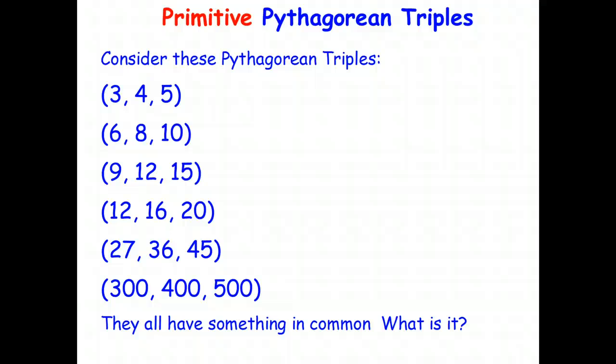G'day students. In the last video we introduced you to an interesting application or area of study involving the Pythagorean theorem called Pythagorean triples, which are just three numbers that basically fit the Pythagorean theorem, c squared equals a squared plus b squared.